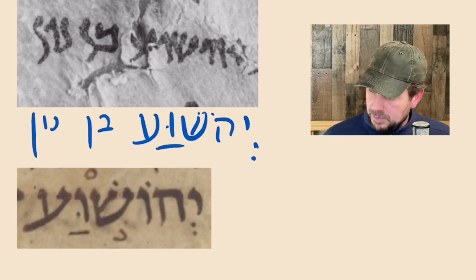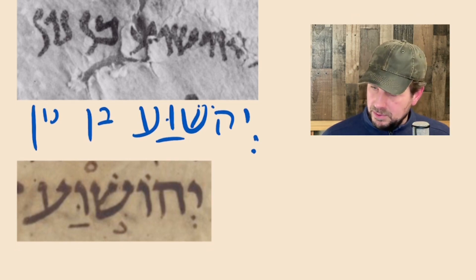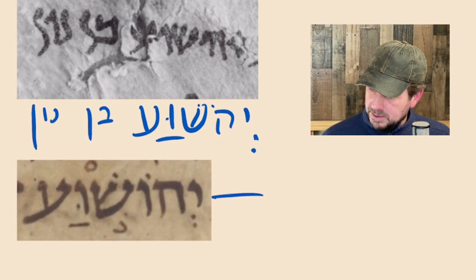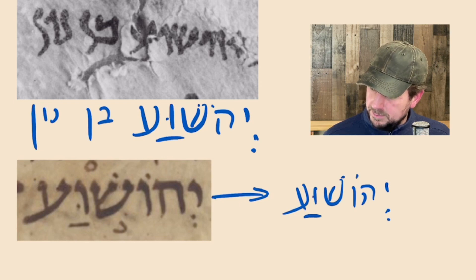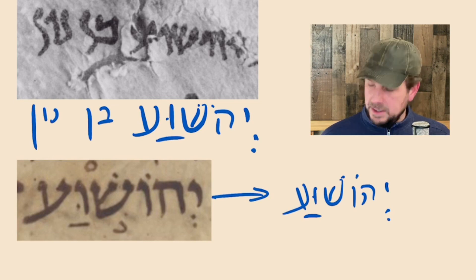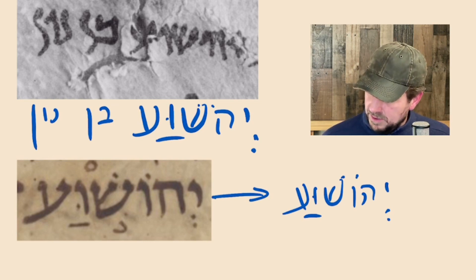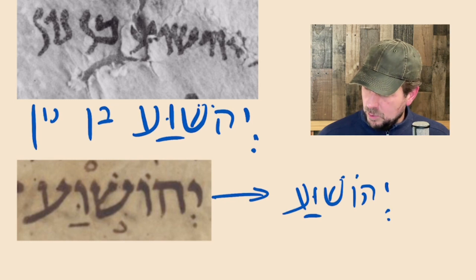And from later manuscripts, just like this beautiful one here — the Damascus Pentateuch. Look at that. Beautiful. Yod, He, Vav, Shin, Vav, Ayin — Yehoshua. And we can see it again — here's another one from the famous L1 manuscript: Yod, He, Vav, Shin, Vav, Ayin. That one's sadly a little bit damaged.